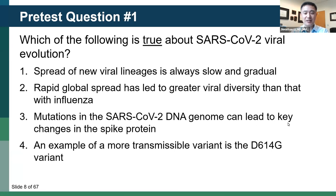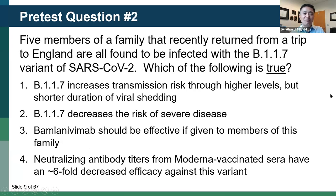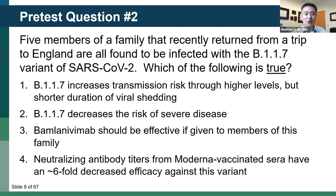Let's go to the second question. Five members of a family recently returned from a trip to England are all found to be infected with the B.1.1.7 variant of SARS-CoV-2. Which of the following is true? Is it B.1.1.7 increases transmission risk through higher levels but shorter duration of viral shedding? Is it that B.1.1.7 decreases the risk of severe disease? Is it that bamlanivimab should be effective if given to members of this family? Or that neutralizing antibody titers from Moderna vaccinated sera have an approximately six-fold decrease in efficacy against this variant? Please vote.